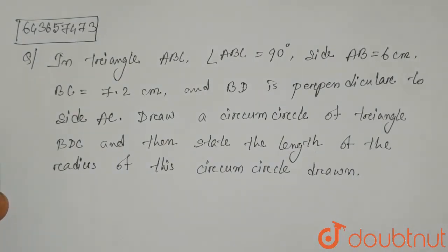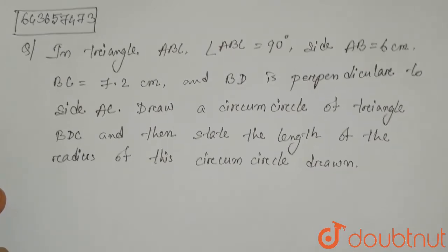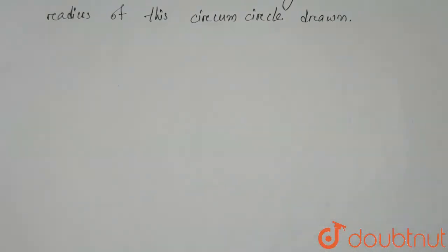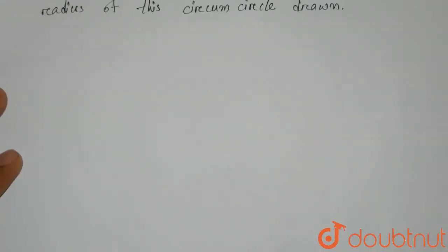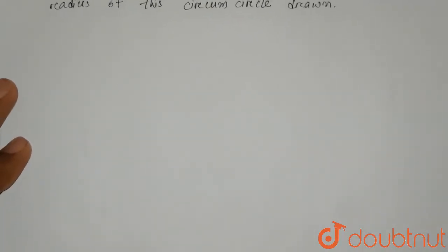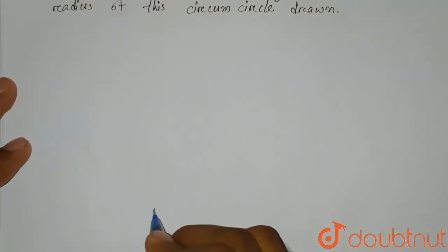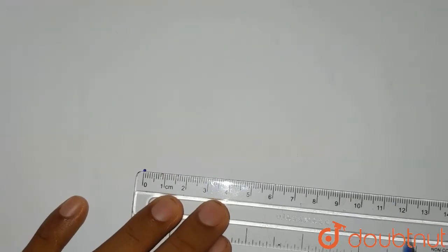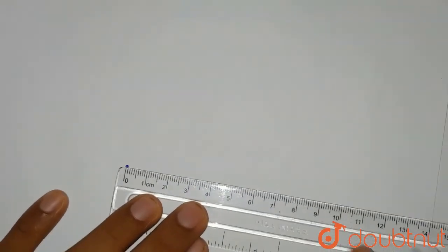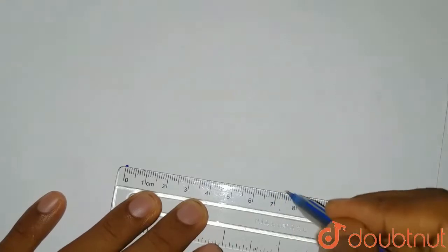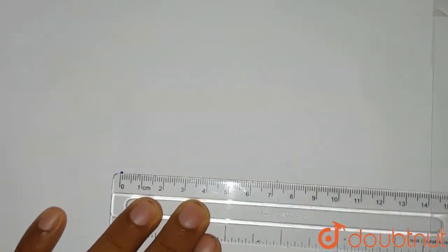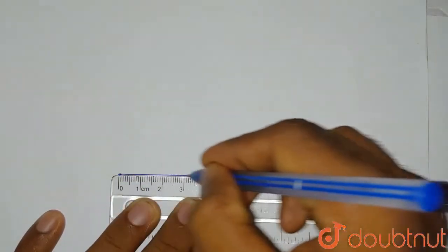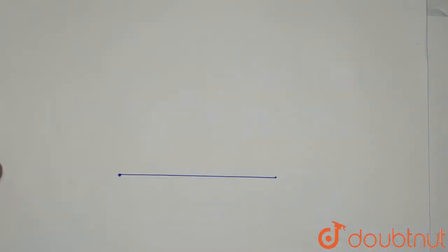First of all, let's draw our triangle ABC. It is given that BC is 7.2 centimeters, so let's take our BC side. This point is B. We draw a 7.2 centimeter line representing our BC line. Joining these two points gives us our BC line — this point is B, this point is C.